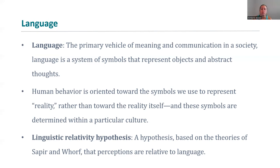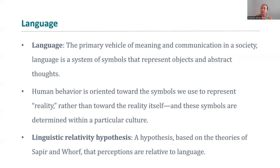Linguistic relativity is a hypothesis based on theories that perceptions are relative to language. We draw our own perceptions of something based on the language we use for it. If we consistently use negative language for a specific group, or if higher-status people in society apply specific language to a group, that group will be seen in that way whether or not it's accurate — because that perception is already tied to the language. Once we have tied that language to an entity or group, it's really hard to undo that systemic learned bias.